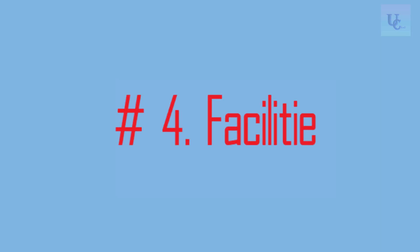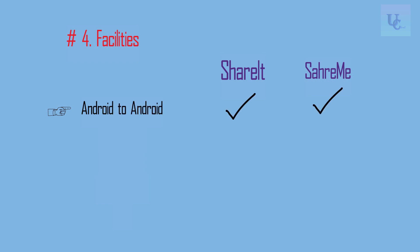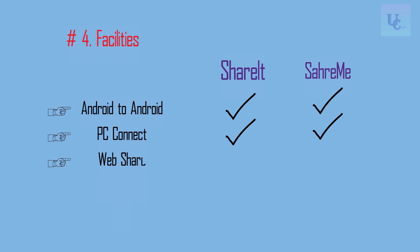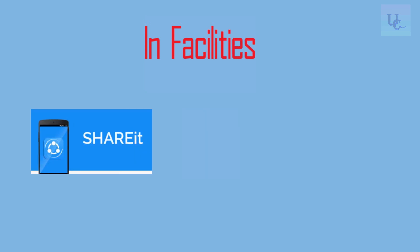Number 4: Facilities. ShareIt and ShareMe both have a lot of facilities. Those are: Android to Android share — yes for both; PC connect — yes for both; Web share — yes for both; Group share — ShareIt has the facility but ShareMe does not; Easy to use — ShareIt no, ShareMe yes. Overall, in facilities ShareIt and ShareMe are the same.